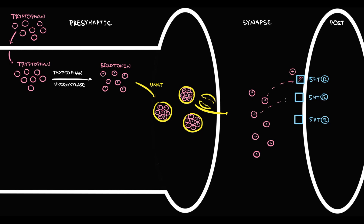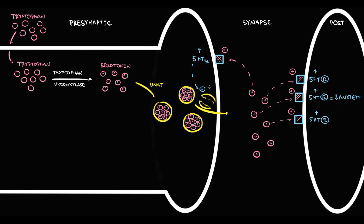With binding, serotonin activates serotonin receptors, and activation of serotonin receptors decreases anxiety. Some of the serotonin molecules bind to serotonin 1A receptor on the presynaptic neuron, which is an autoreceptor. With activation, this receptor inhibits the exocytosis of serotonin vesicles into the synapse, providing reciprocal regulation.